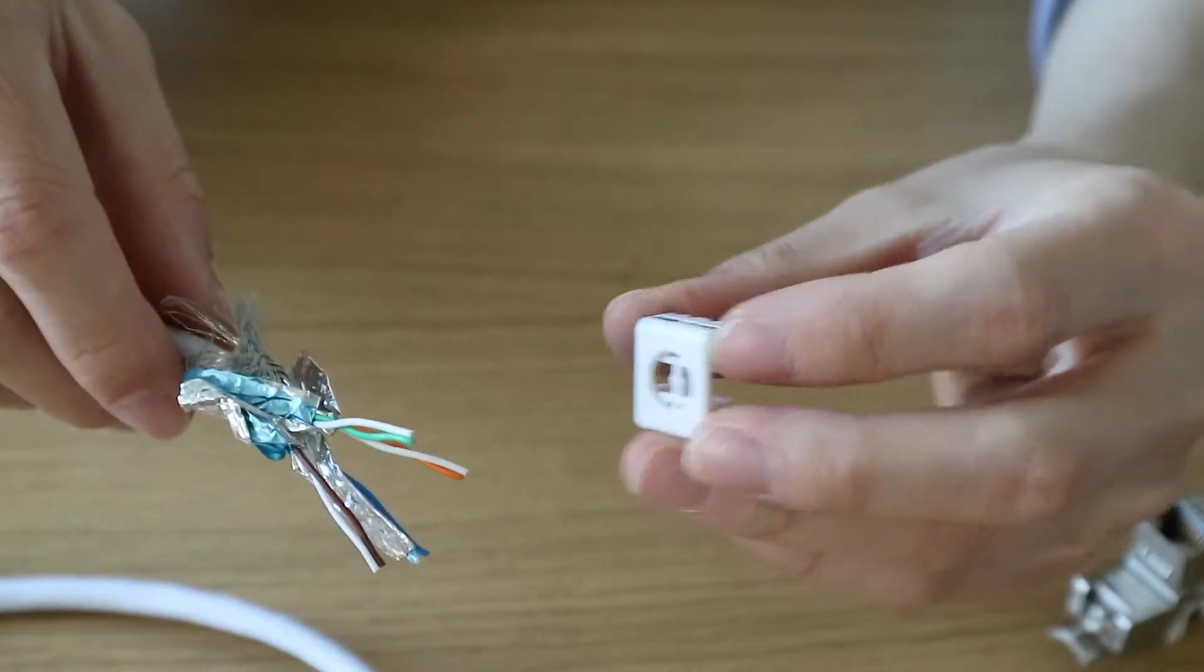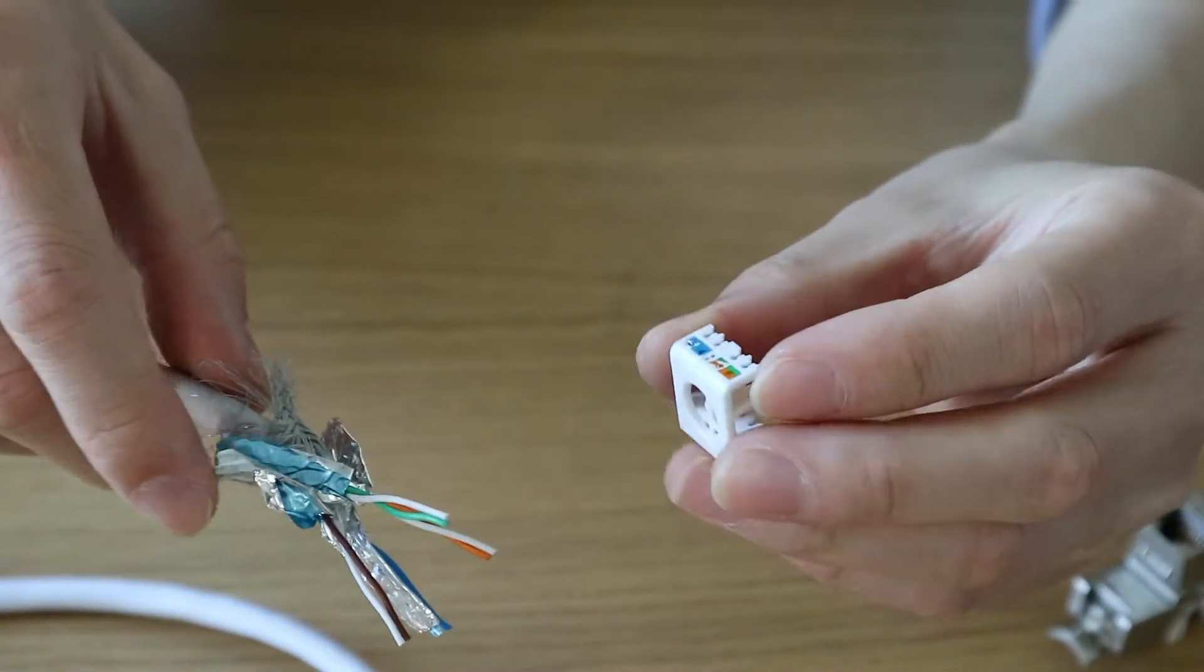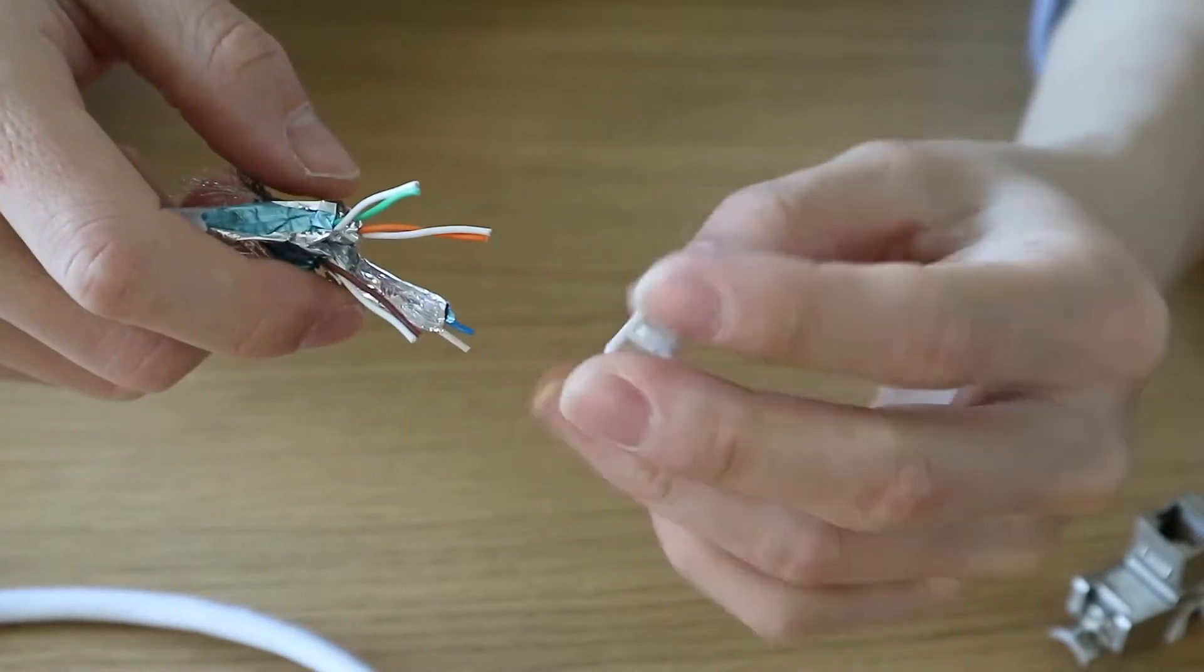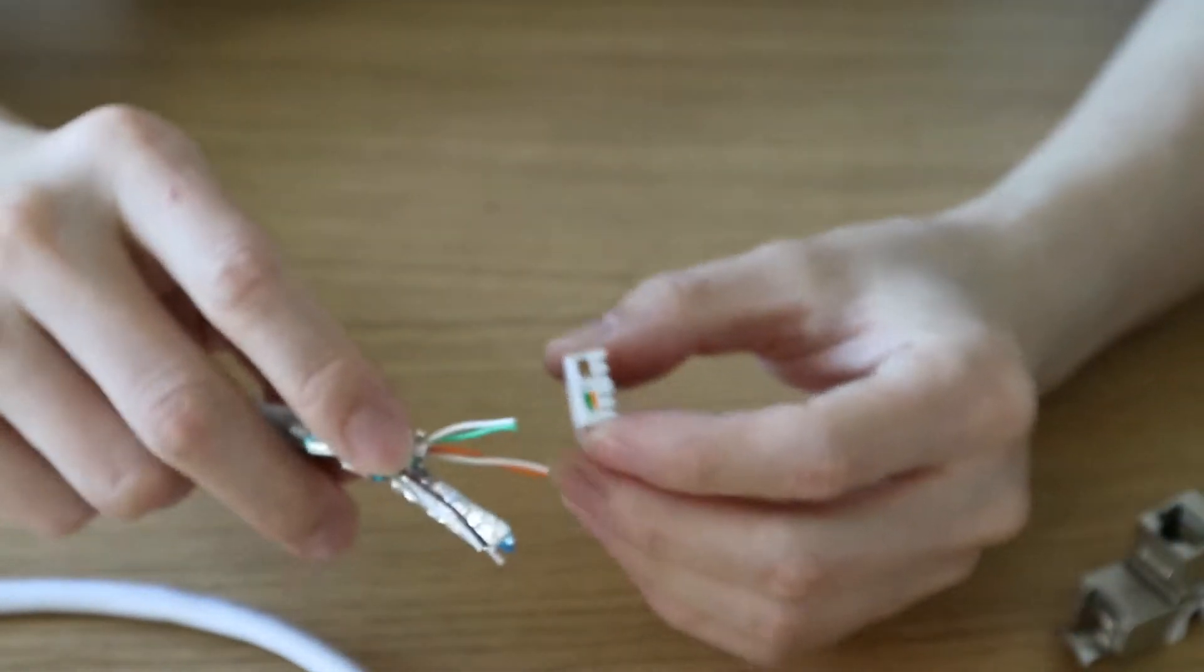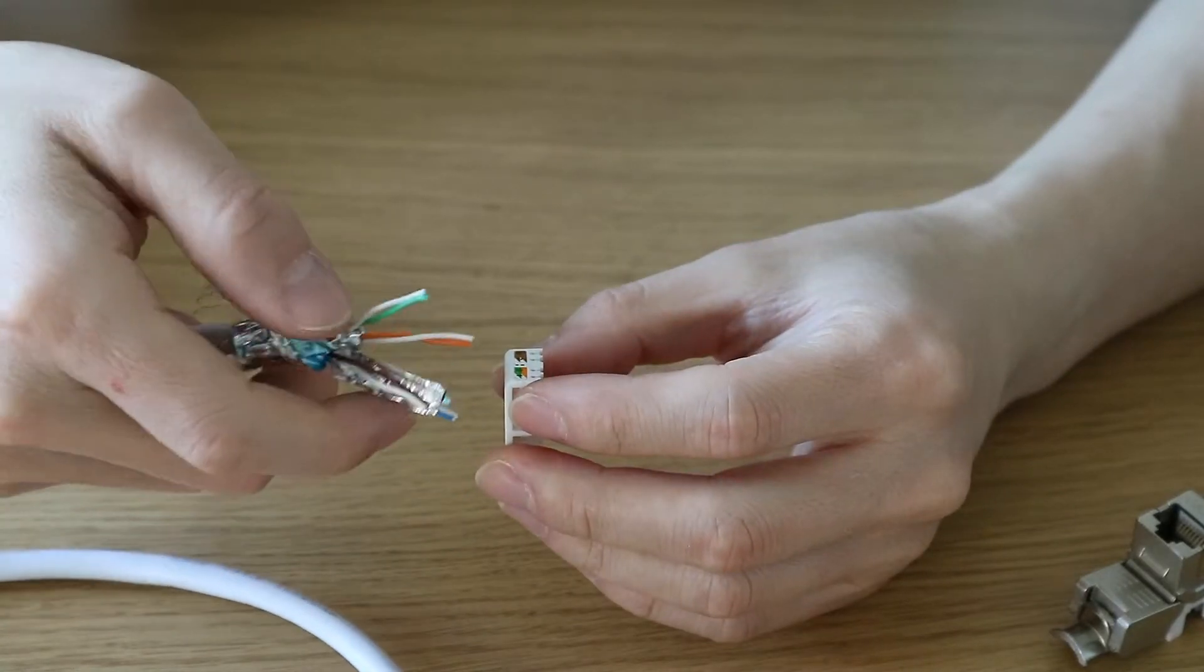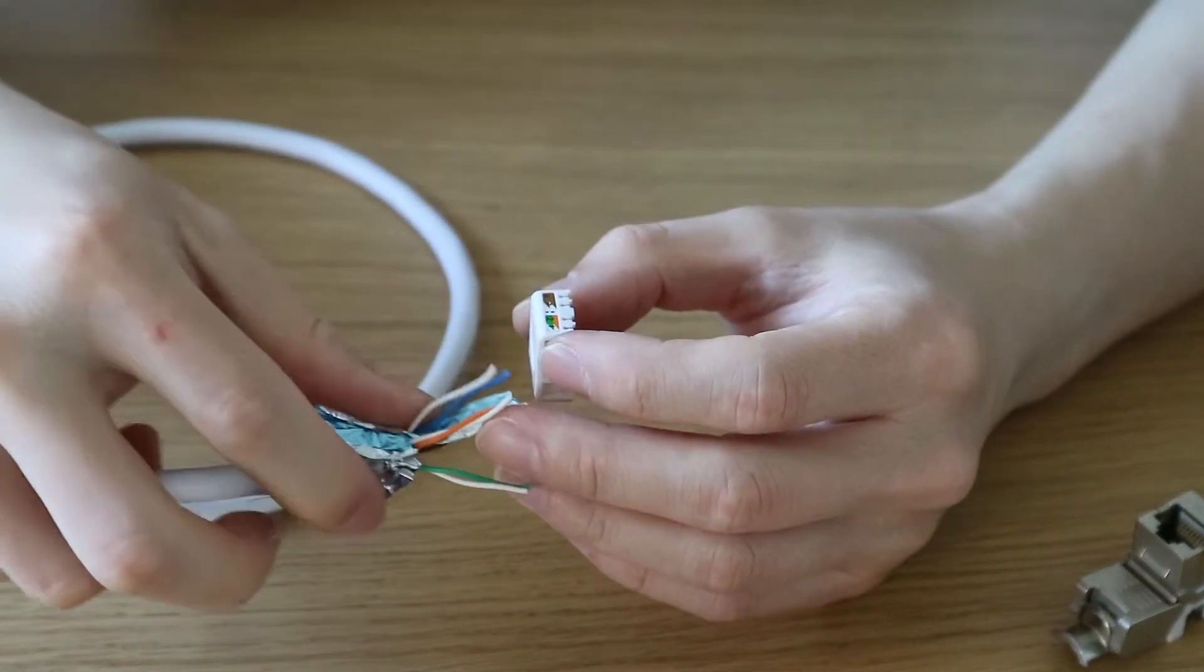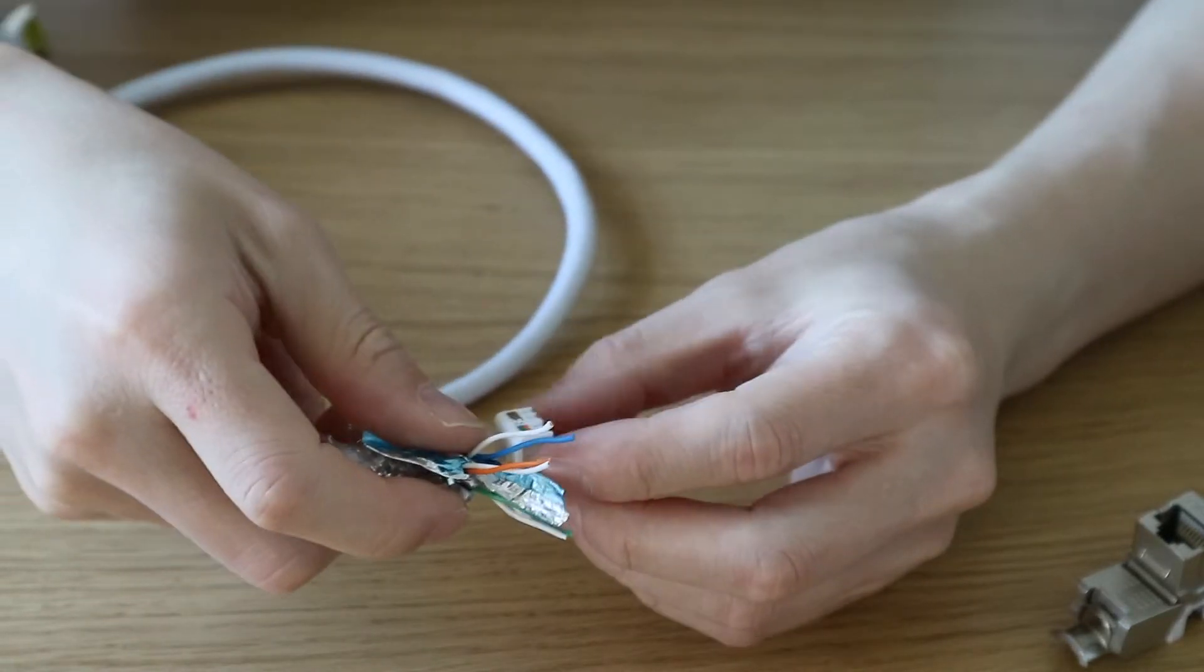So for this instance, we are going to be doing the B standard. So let me see. Brown is brown. So this will be brown. This will be orange.